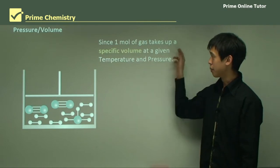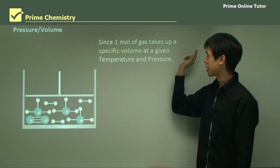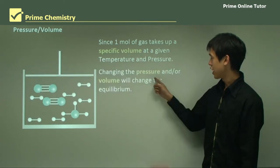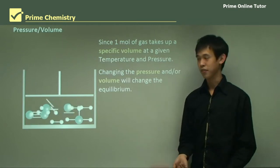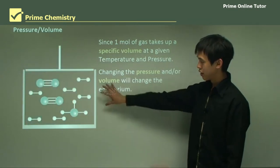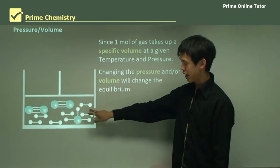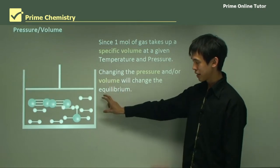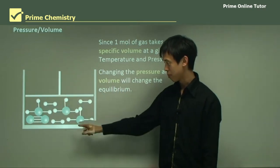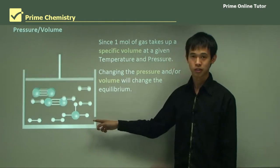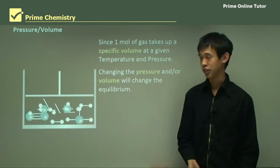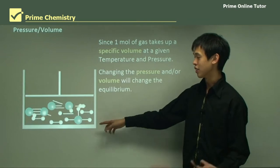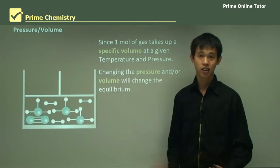Regarding pressure and volume: because one mole of gas takes up a specific volume at a given temperature and pressure, changing the pressure and/or volume will change the equilibrium. In this animation, there's a certain number of nitrogen and hydrogen molecules at the start, but when we compress it, they shift in composition and we get more ammonia molecules. By imparting more pressure, we're trying to get the system to take up less space, and we see a change in composition.